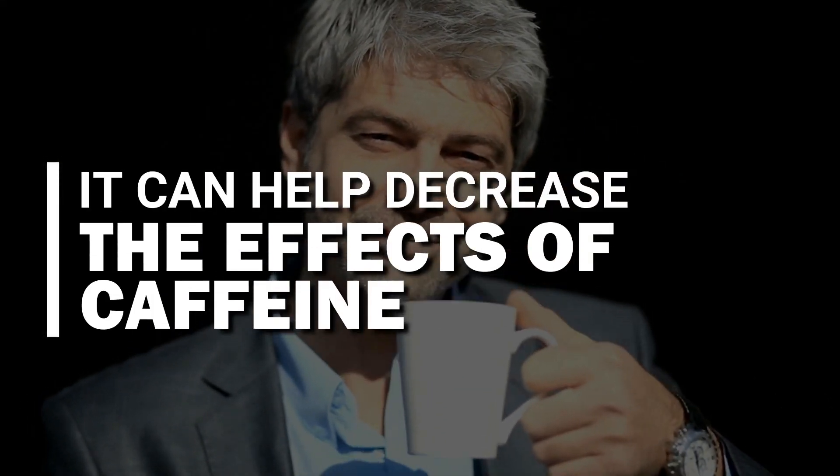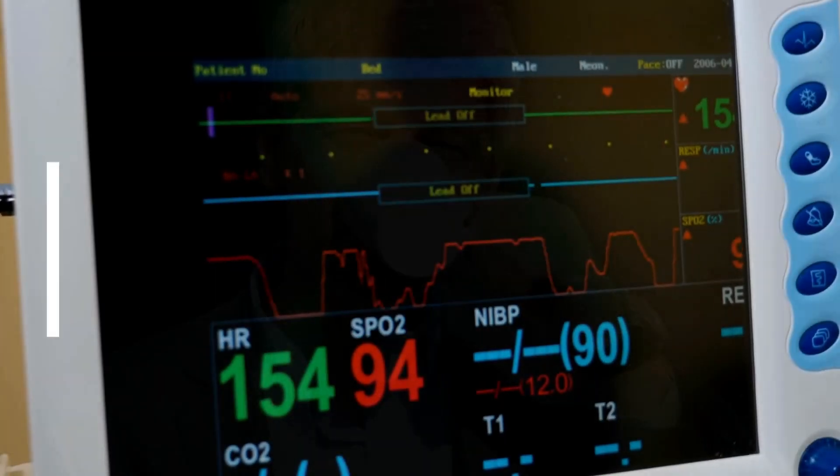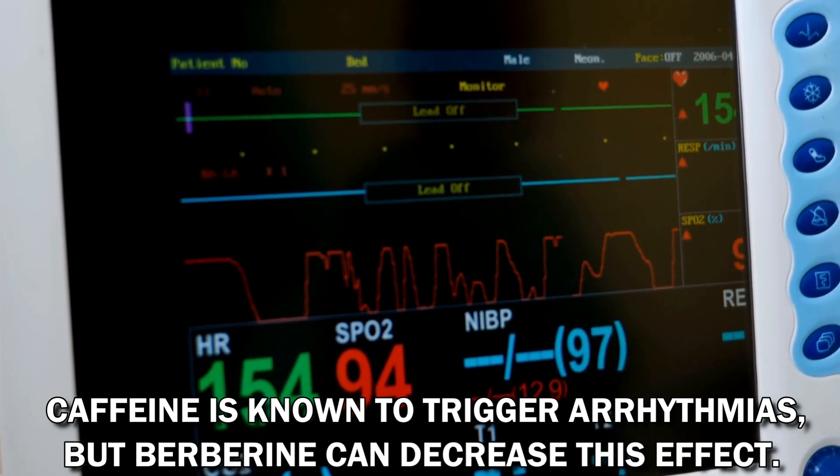Number seven, it can help decrease the effects of caffeine. Caffeine is known to trigger arrhythmias, but berberine can decrease this effect.